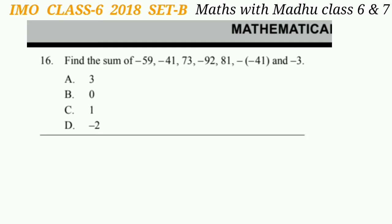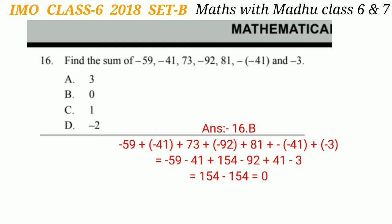Find the sum of -59, -41, 73, -92, 81, -(-41), and -3. If we add these, we get 154 minus 154, which equals 0. So our answer will be option B.